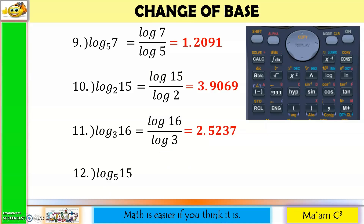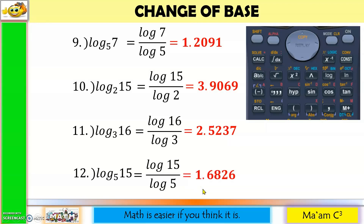Last one: the logarithm of 15 to the base 5 will become the logarithm of 15 divided by the logarithm of 5. Using a calculator, this will give you 1.6826. In all of these cases, our base is 10. These are common logarithms.